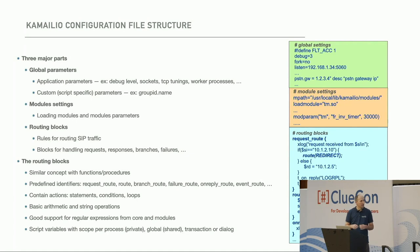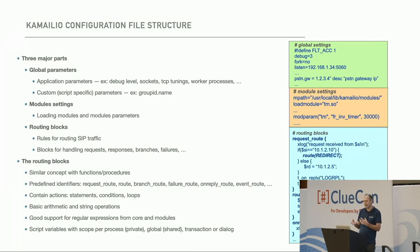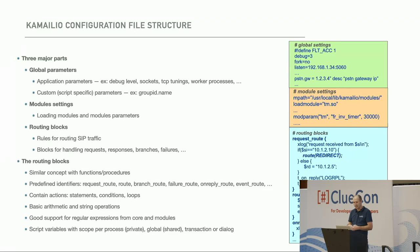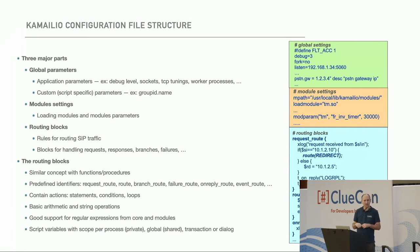After loading the modules and setting module parameters, we have routing blocks — think of them like functions called or executed by Kamailio on various events: receiving a SIP request, receiving a SIP response, or cases like failure routing where we want to reroute. Think of LCR gateway hunting — the first gateway has no available channels so you want to reroute. We give you full flexibility in deciding routing, and it's a kind of programming scripting language where you tell Kamailio what to do with each packet.